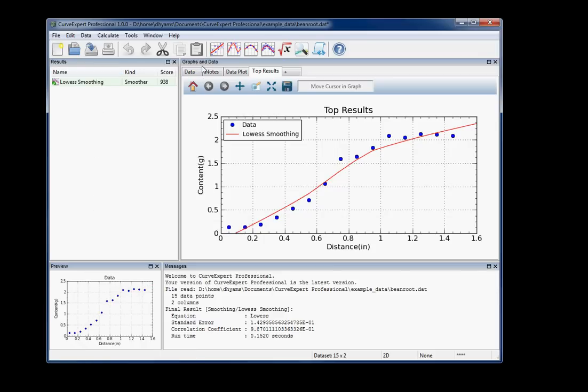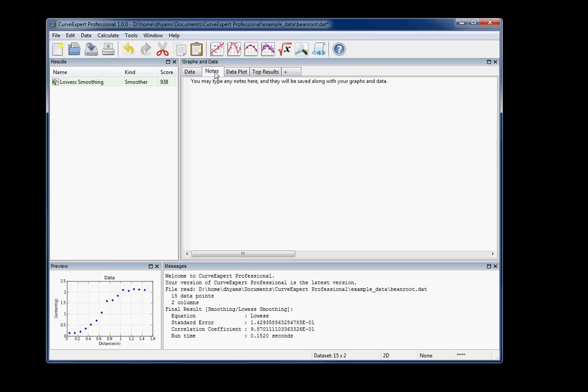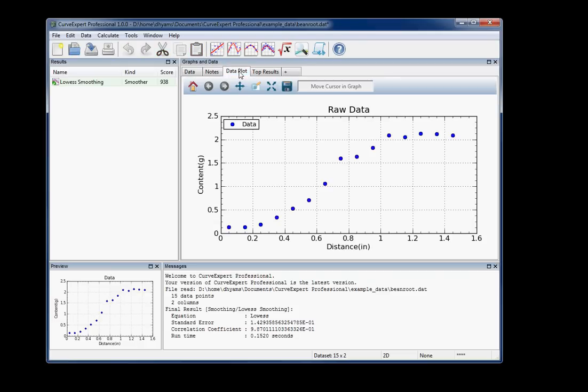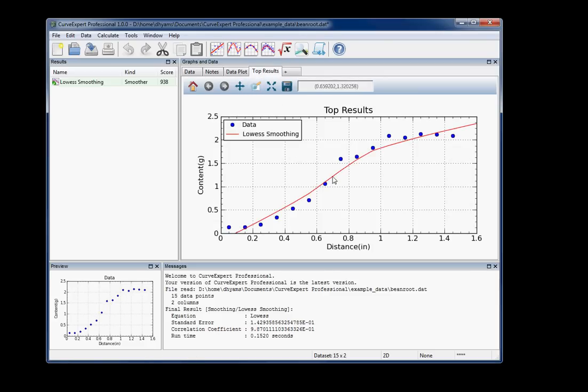In the Graphs and Data pane, you have, of course, your spreadsheet, some notes that you can type and save along with your data if you choose to save a CurveExpert file. You have just the data as a plot, and then you have a top results plot, which basically shows you selected results from the batches of calculations that you've done.